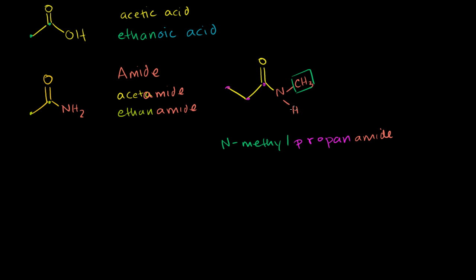If you had another methyl here, you would say N, N-dimethyl. If you had a methyl here and a propyl group here, you would have called it N-methyl, N-propyl, propanamide. So hopefully that gives you a sense of amides.